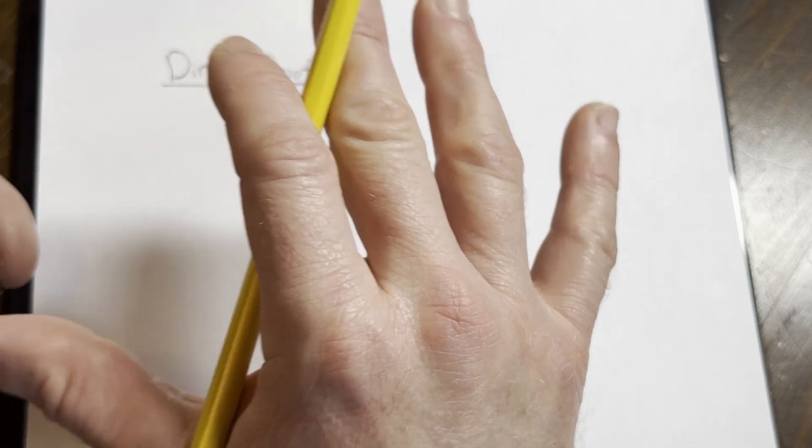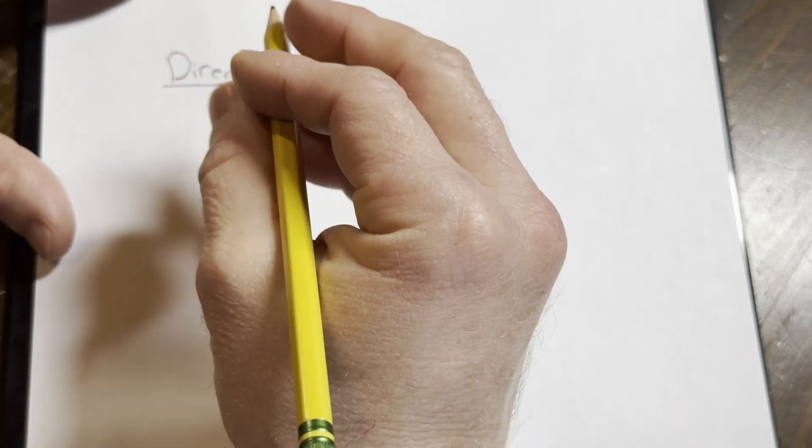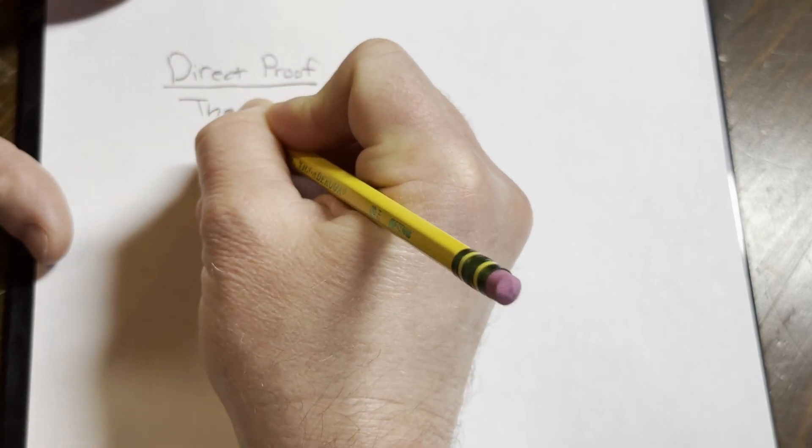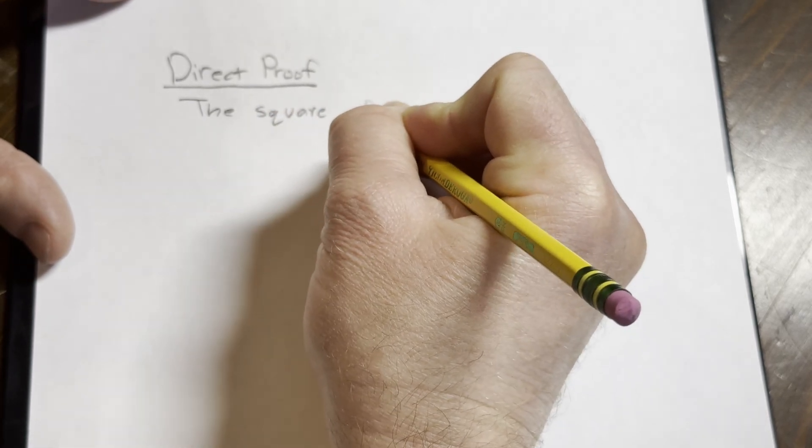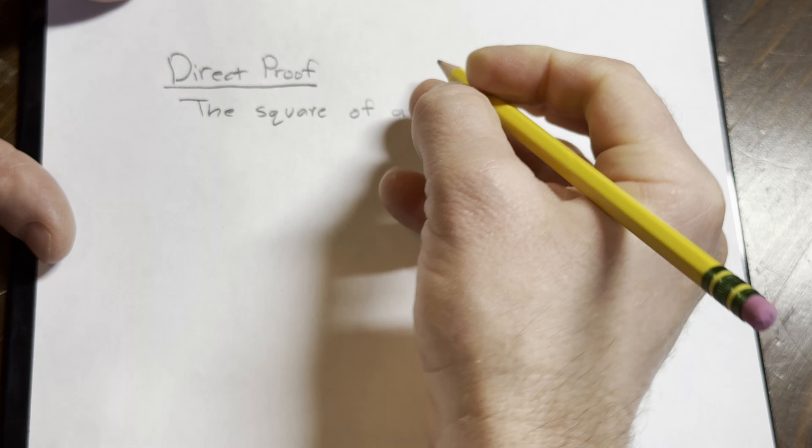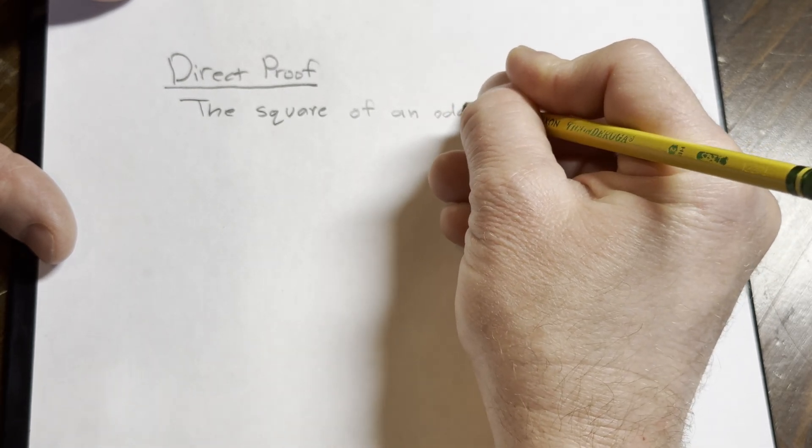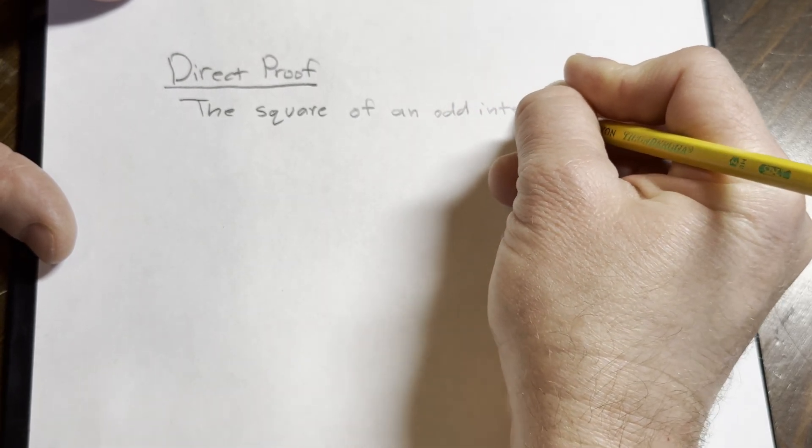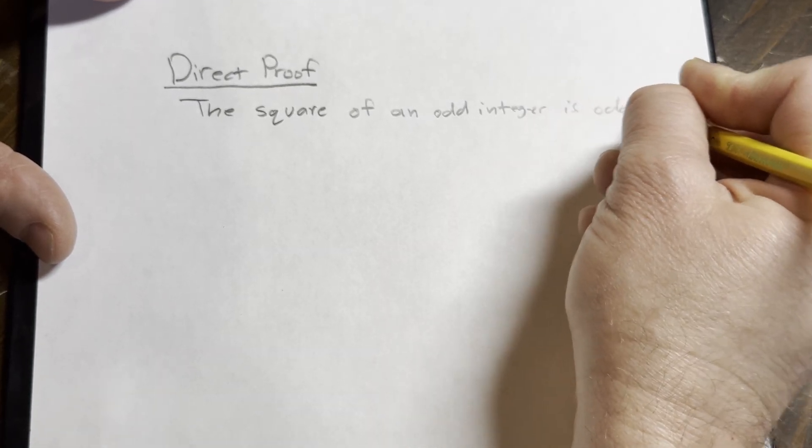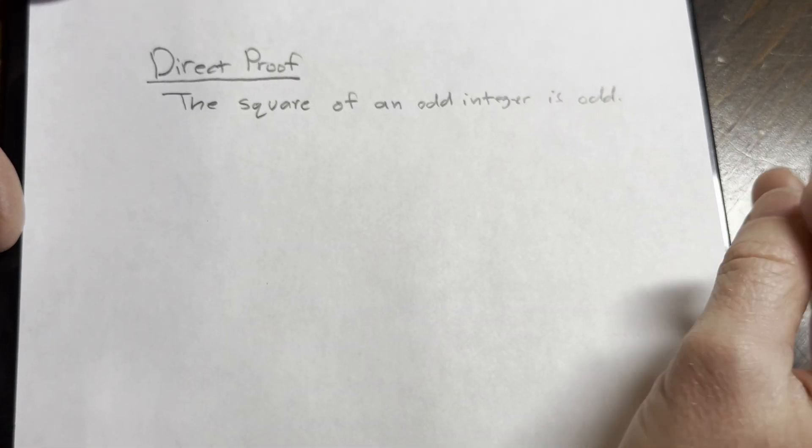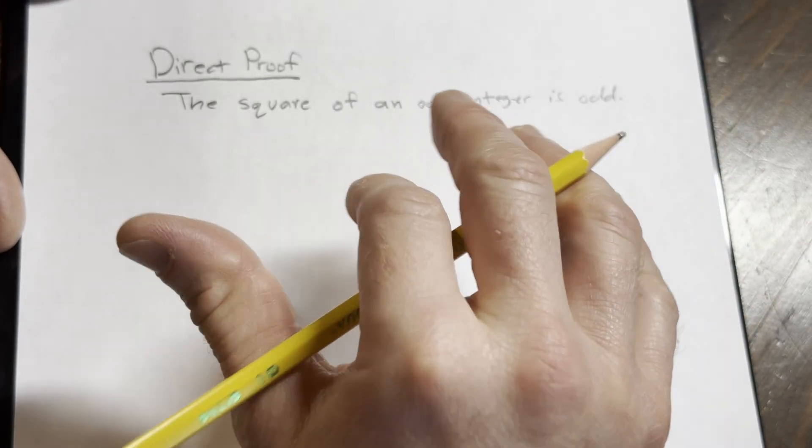Okay, so for our direct proof, we're going to prove the statement: The square of an odd integer is odd. That's going to be the statement that we're going to prove.